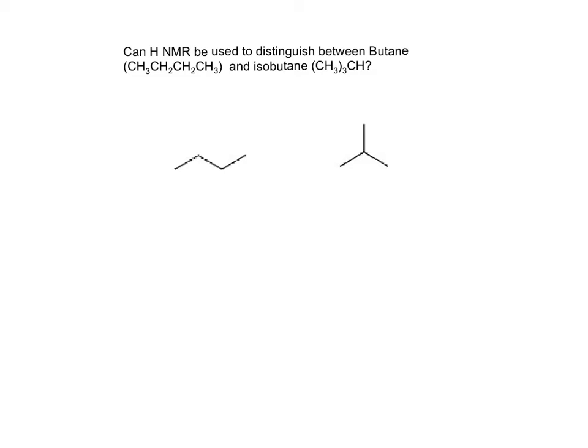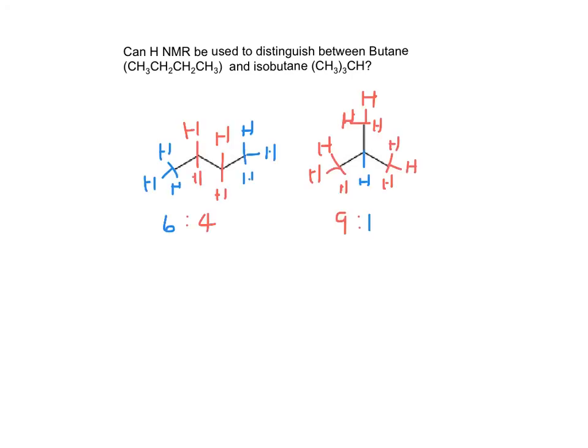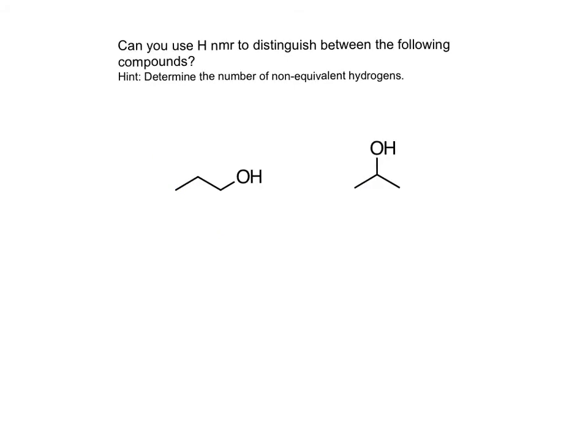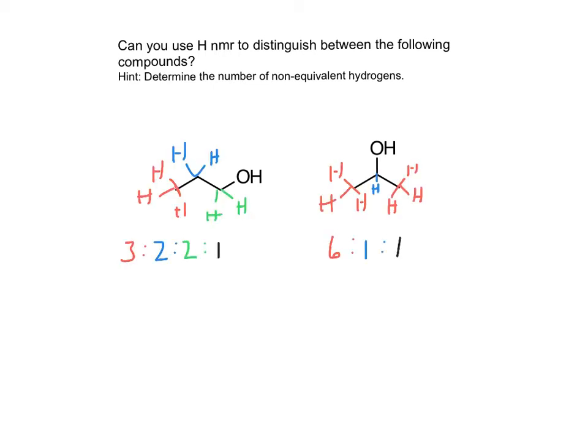Answer this question: can proton NMR be used to distinguish between normal butane and isobutane? Stop the video and think about that. The answer is yes — look at which protons are equivalent and non-equivalent. Similarly, can proton NMR be used to distinguish between 1-propanol and isopropanol? The answer is also yes — compare the equivalent and non-equivalent protons and the ratios.